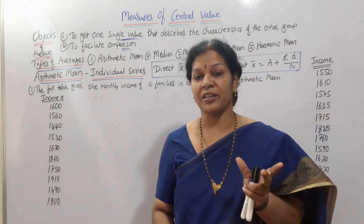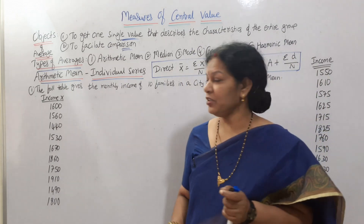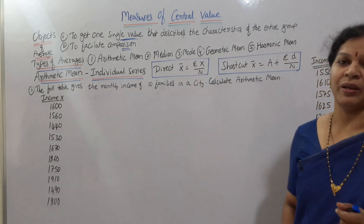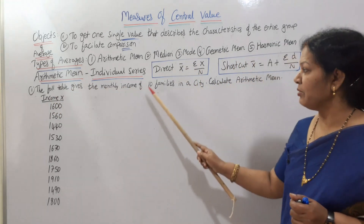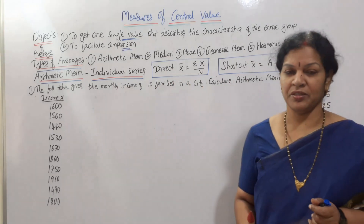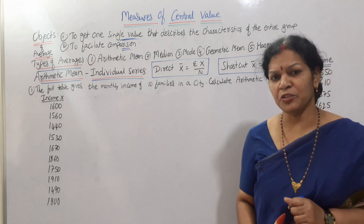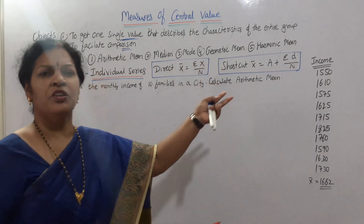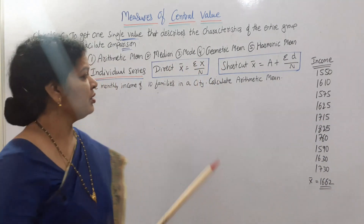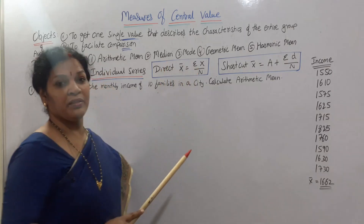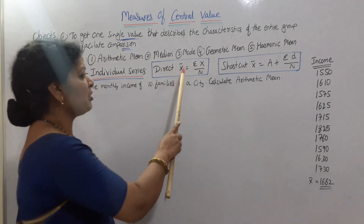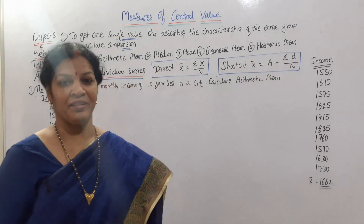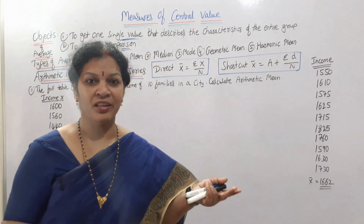Now let us see how to calculate the arithmetic mean in individual series. The problem given is: the following table gives the monthly income of 10 families in a city — calculate arithmetic mean. For calculation of arithmetic mean in individual series, there are two methods: direct method and shortcut method (also called indirect method). Direct method formula is x̄ = Σx / n. Shortcut method formula is x̄ = A + Σd / n. Both methods are available and we can use either one.